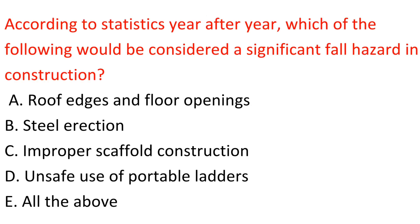Question: According to statistics year after year, which of the following would be considered a significant fall hazard in construction? A. Roof edges and floor openings. B. Steel erection. C. Improper scaffold construction. D. Unsafe use of portable ladders. E. All the above. Answer: E. All the above.